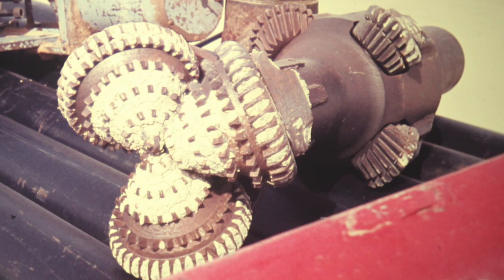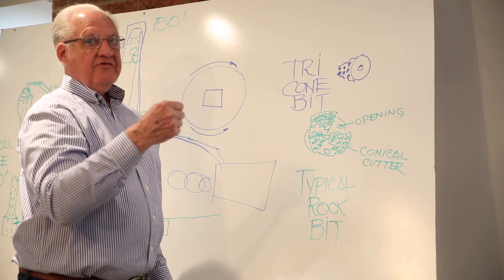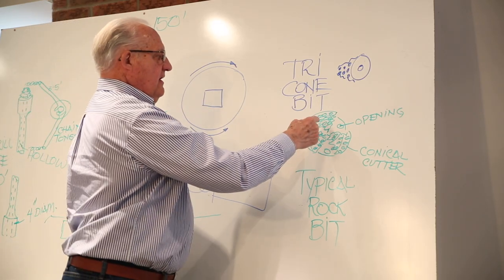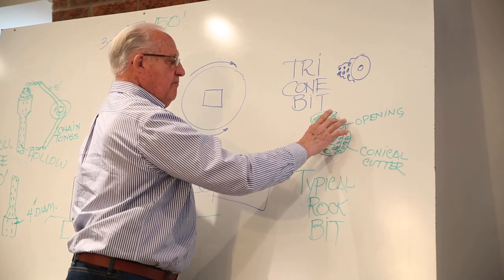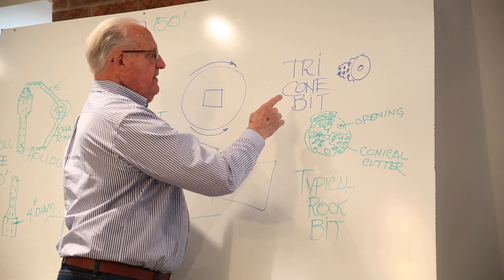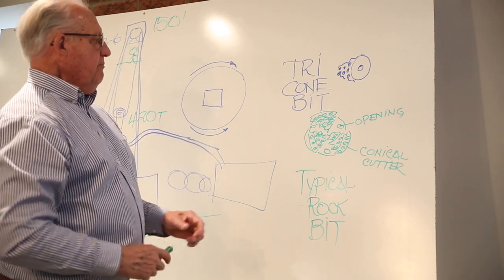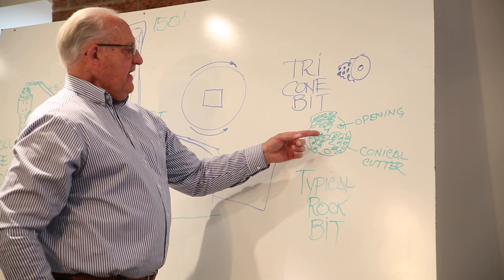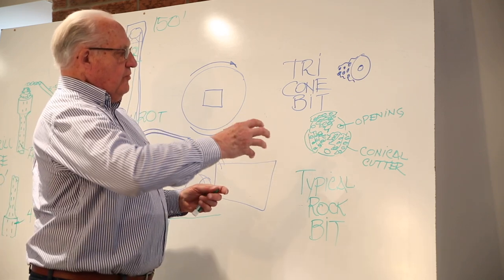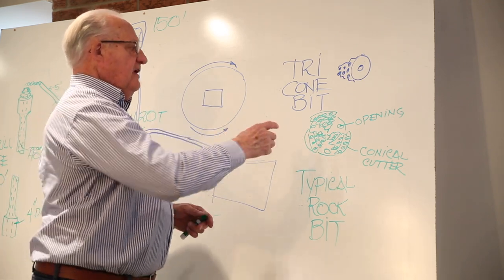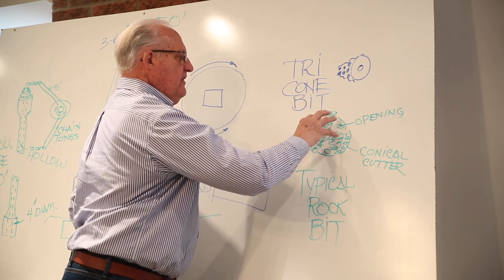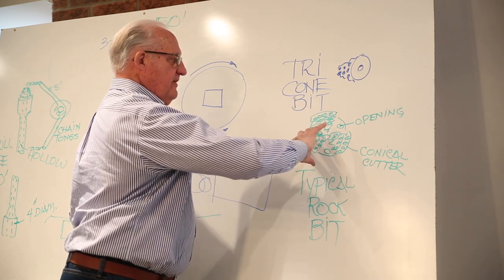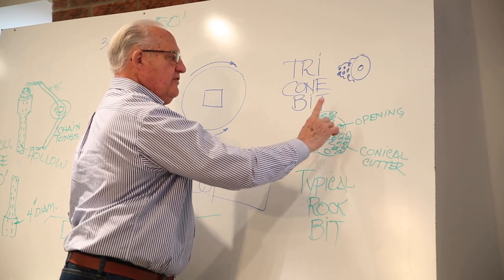But there are all kinds. Some have diamonds on them for real hard rock. Others are hardened steel with little knobs on them. It's conical shaped, like a cone, like an ice cream cone, and they're on a shaft mounted to the bottom of this tri-cone bit. Now each one of these tri-cones can rotate on its own shaft.